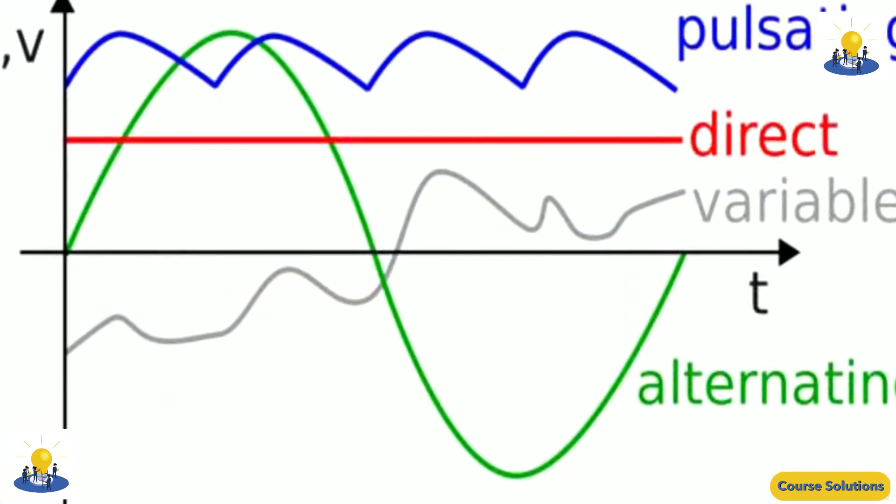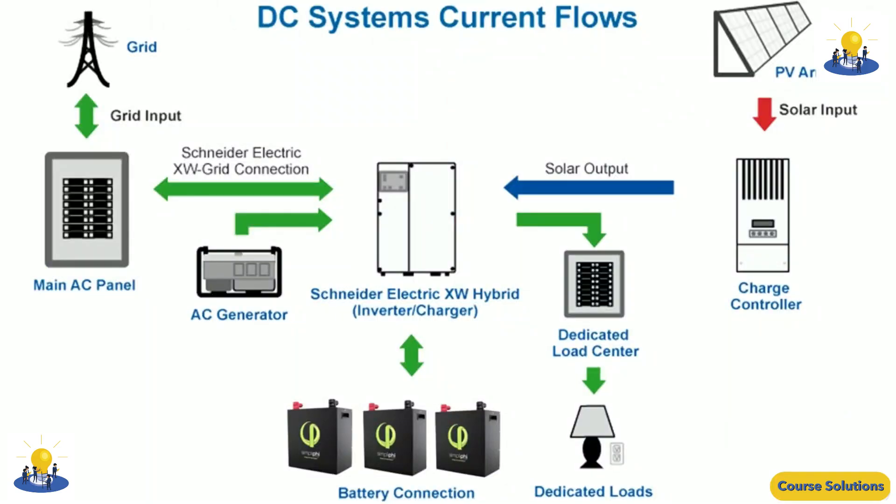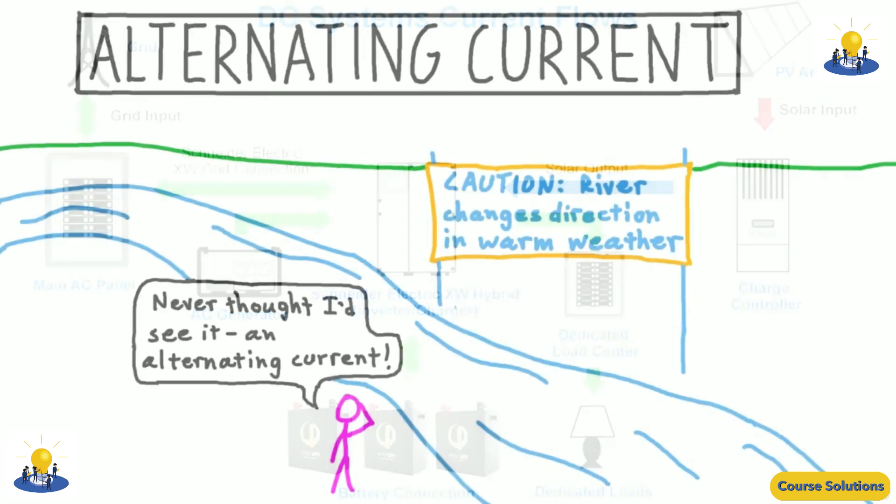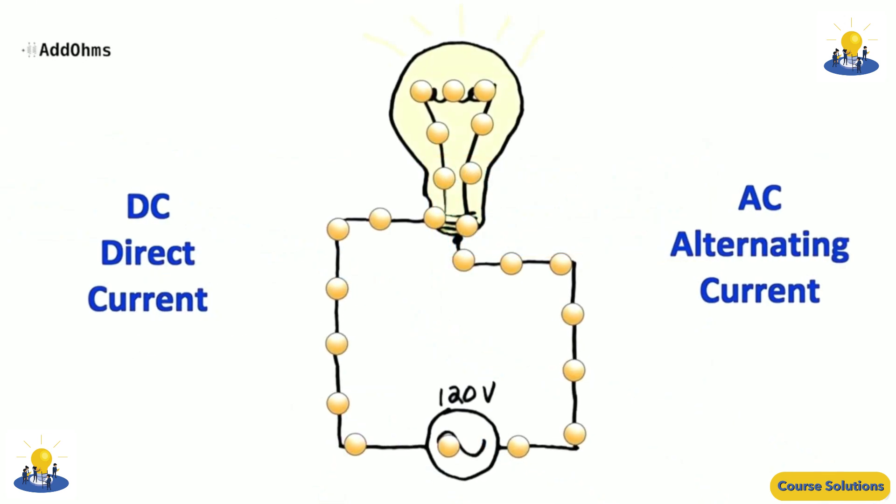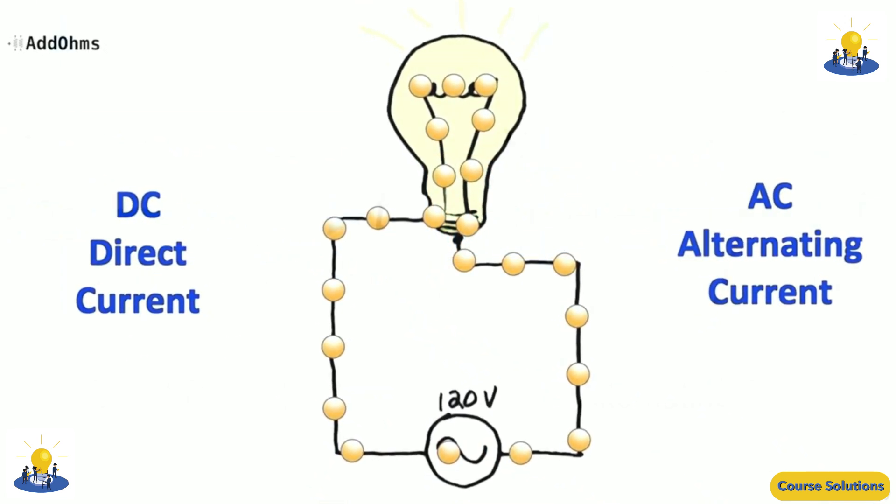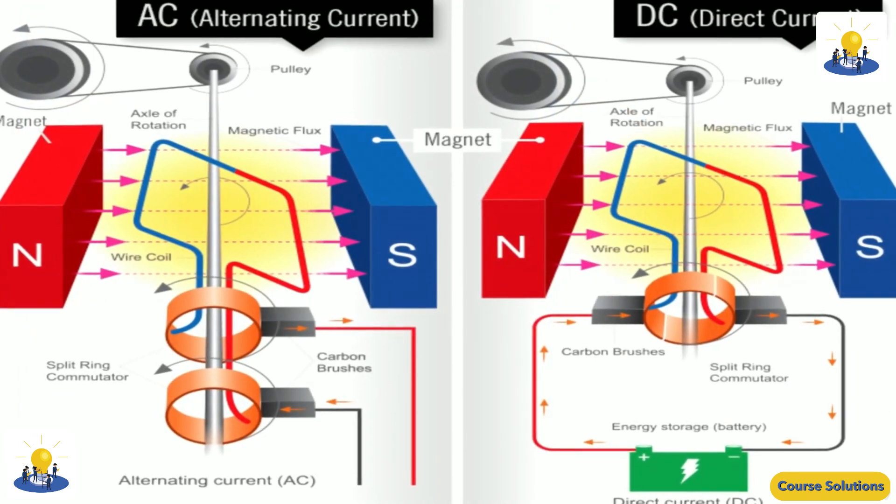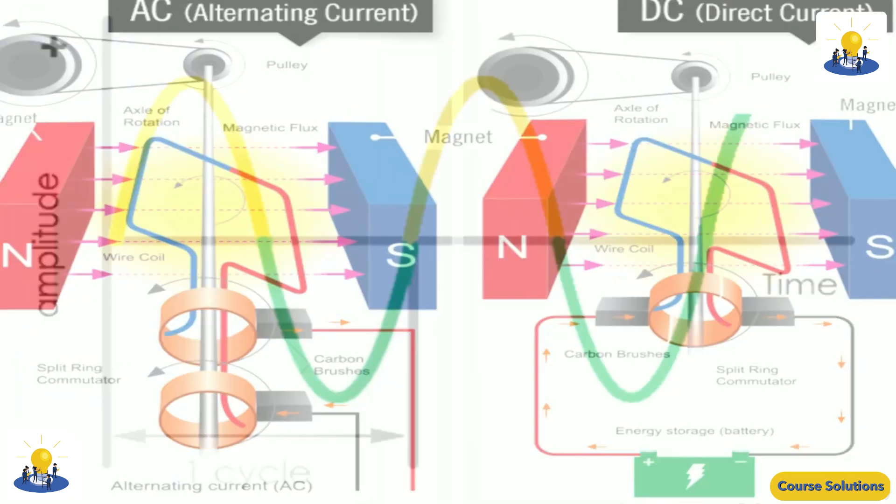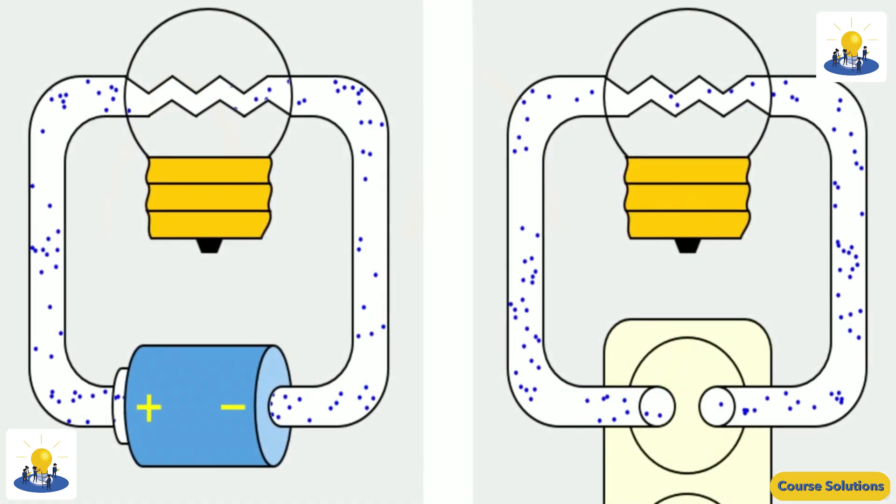The voltage in a direct current circuit must be constant, or at least relatively constant, to keep the current flowing in a single direction. Thus, the voltage provided by a flashlight battery remains steady at about 1.5V. The positive end of the battery is always positive relative to the negative end, and the negative end of the battery is always negative relative to the positive end. This constancy is what pushes the electrons in a single direction.